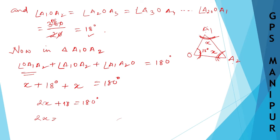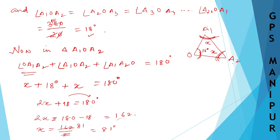So 2X plus 18 equals 180, which gives 2X equals 162, so X equals 81 degrees.